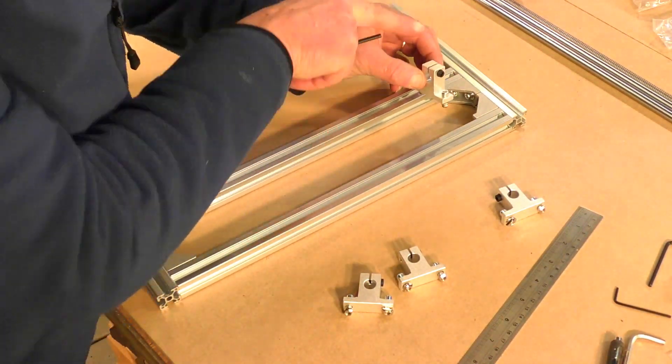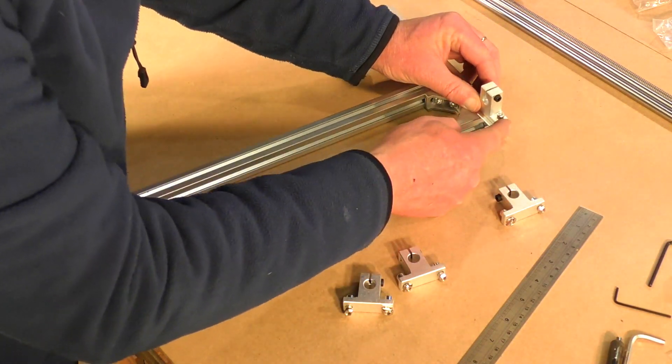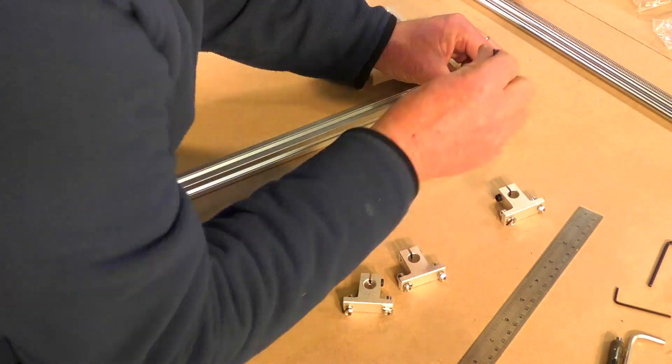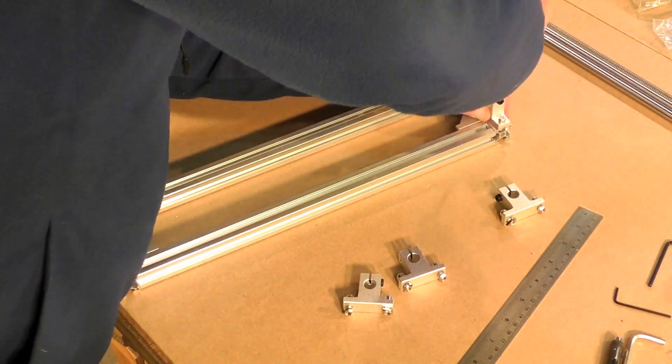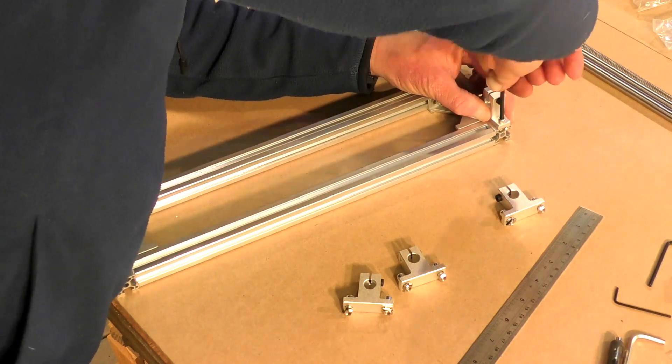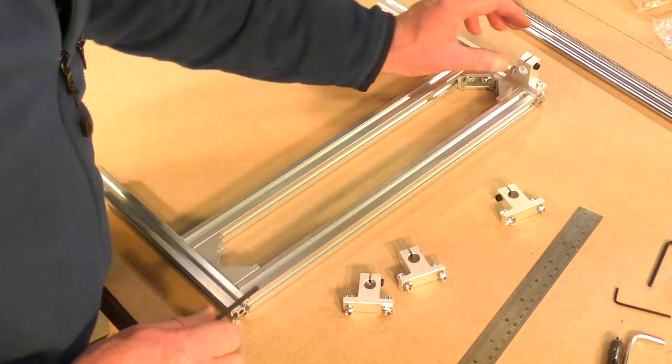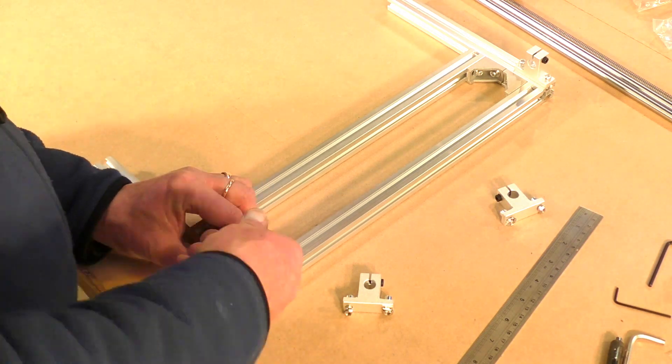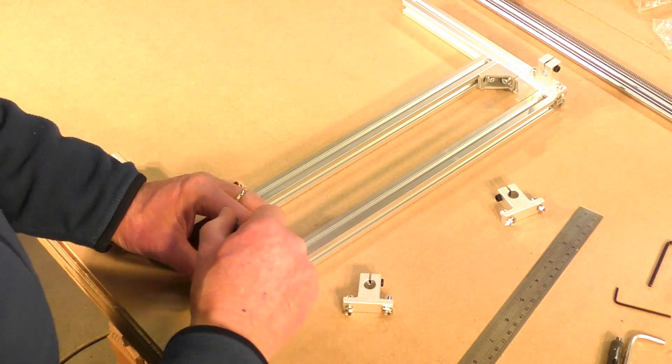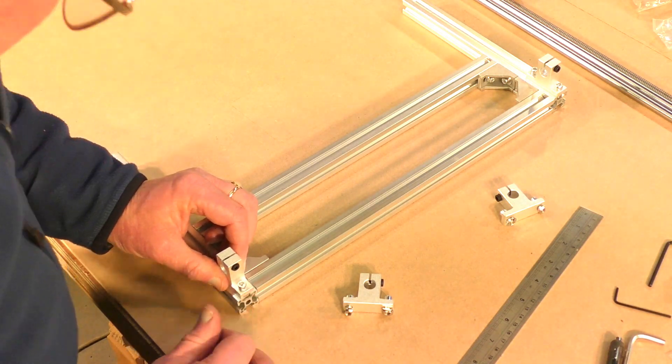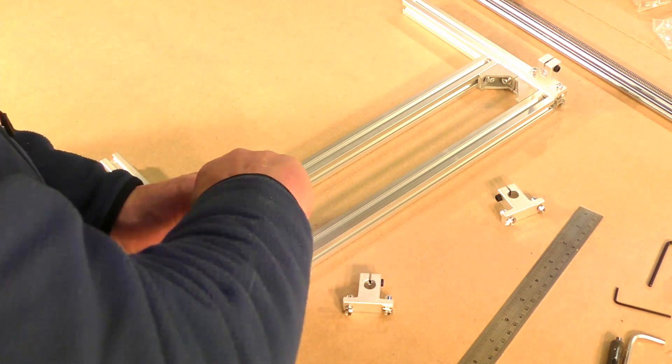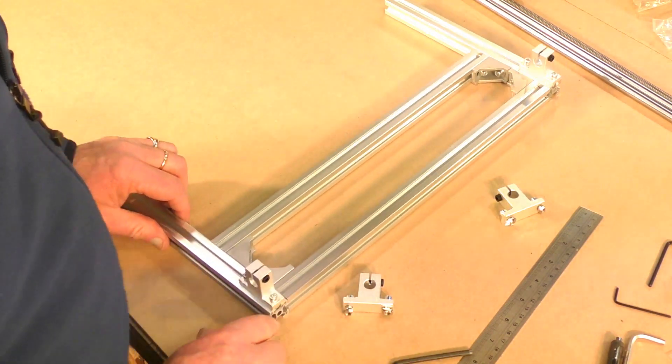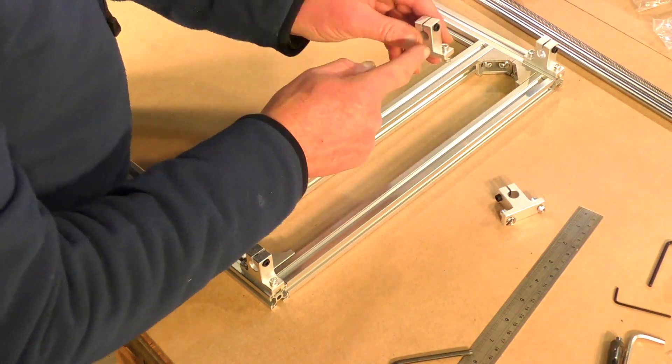So now we're putting the gantry part together. Now what I'm indicating here is that you see the black tightening screw there on the clamp, that needs to be facing up. And I'm also indicating there that the end of this riser there needs to be at the end of the gantry chassis part because everything relies on that.